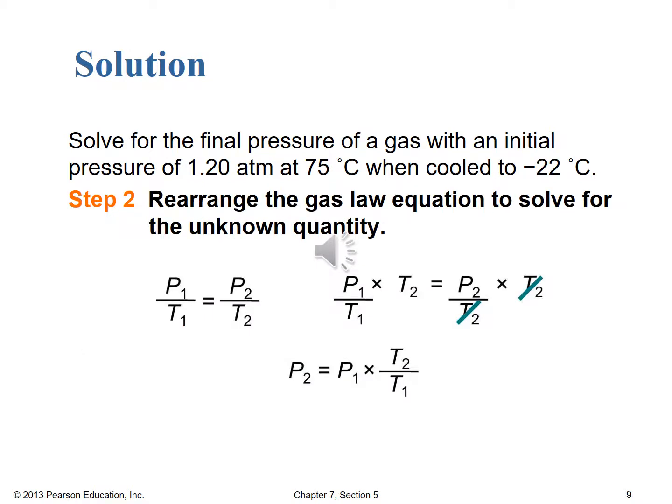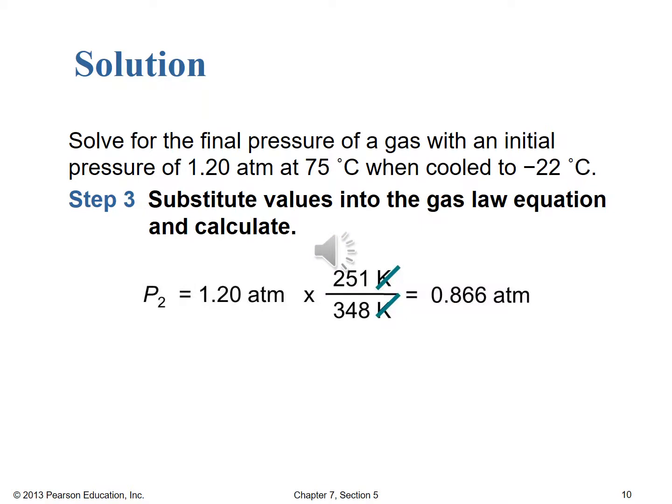Step two: rearrange the gas law to solve for the unknown. Because we're looking for P2, we multiply both sides by T2 to yield P2 = P1 × T2 / T1. Be careful with your calculations. P2 = 1.20 atm × (251 K / 348 K), giving a final pressure of 0.866 atmospheres. It wasn't much different from the one we worked together — just different values for pressure and temperatures.